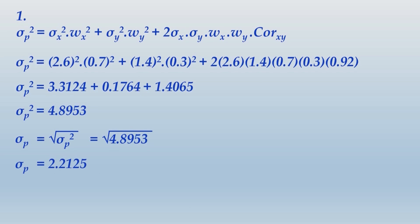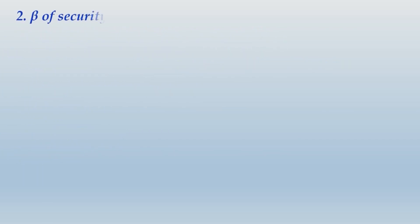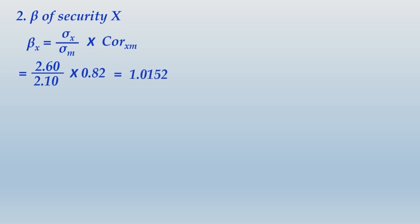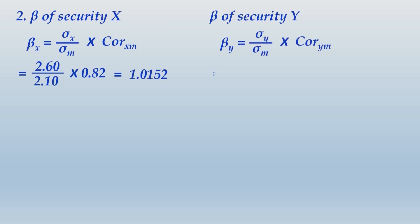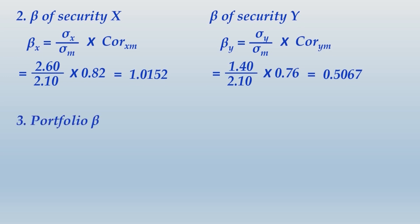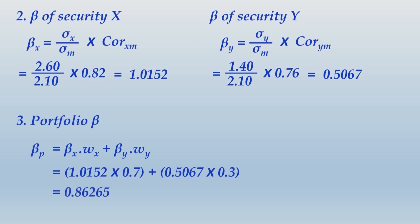For betas of individual securities using the correlation method: beta X = (sigma X / sigma M) × correlation(X, M). Beta Y = (sigma Y / sigma M) × correlation(Y, M) = 0.5067. Portfolio beta = 0.7 × beta X + 0.3 × 0.5067 = 0.86265.